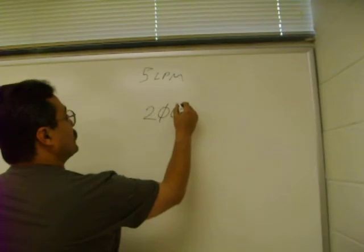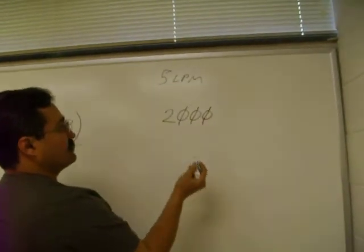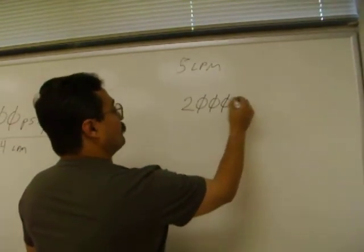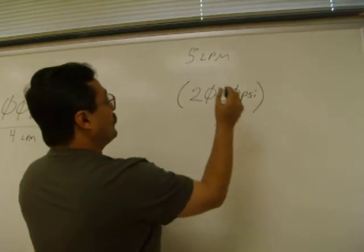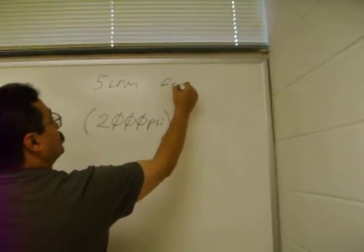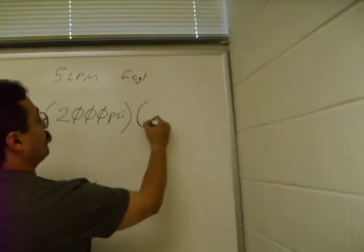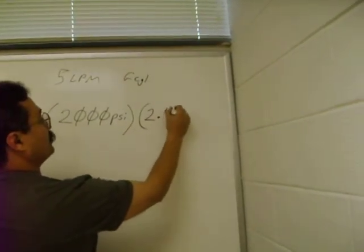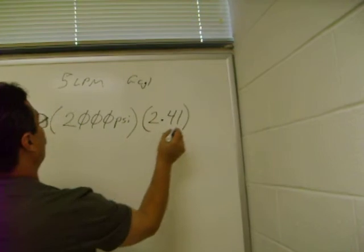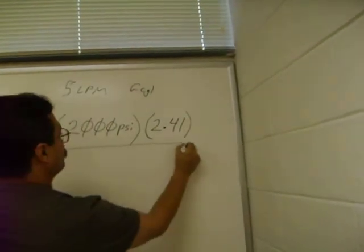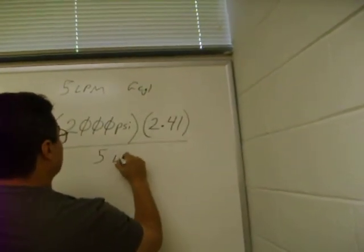So we're going to use the same formula and substitute 2,000 PSI for the pressure. Now, the G-cylinder uses a conversion factor of 2.41, so we're going to use that conversion factor, 2.41, and the doctor's orders were 5 liters per minute.